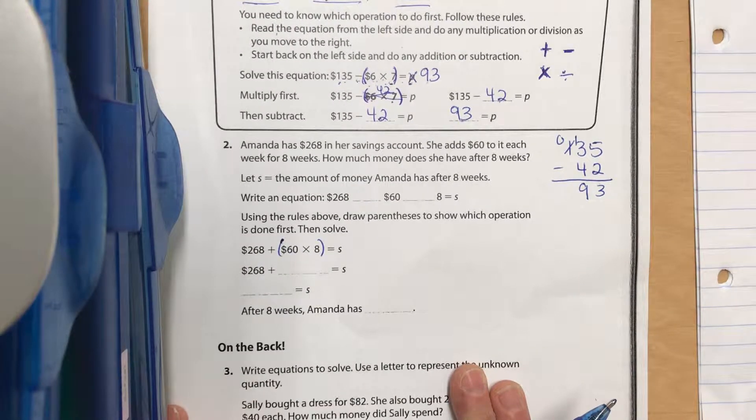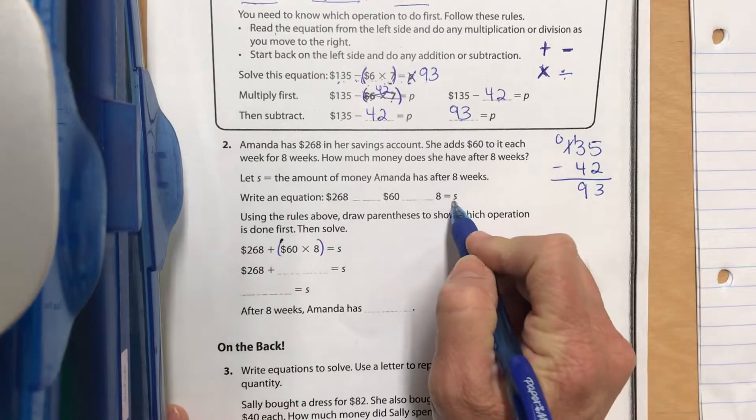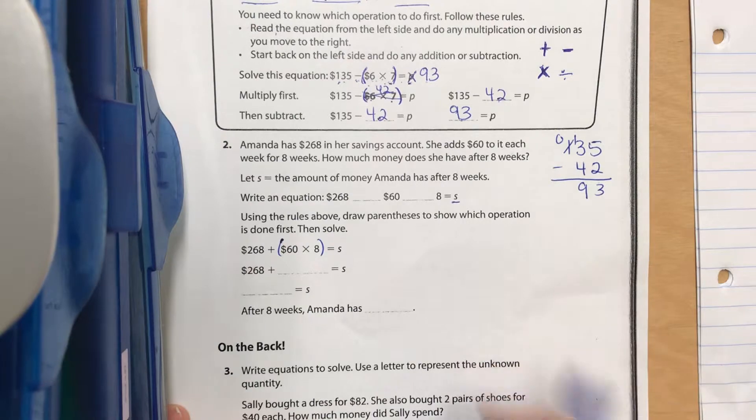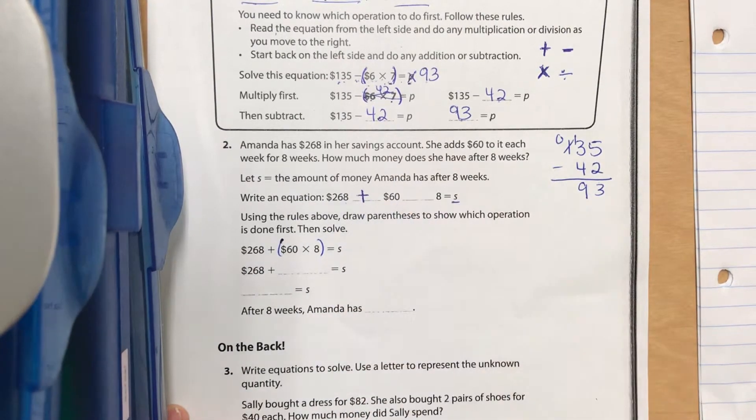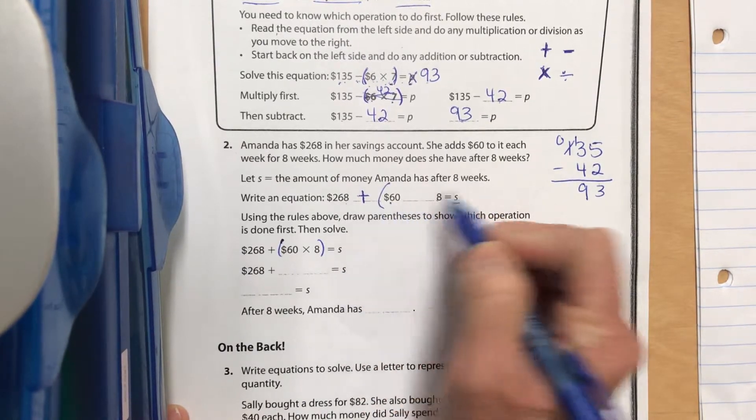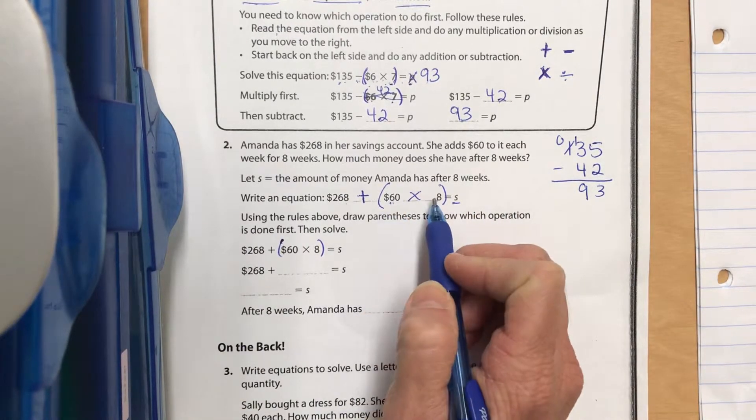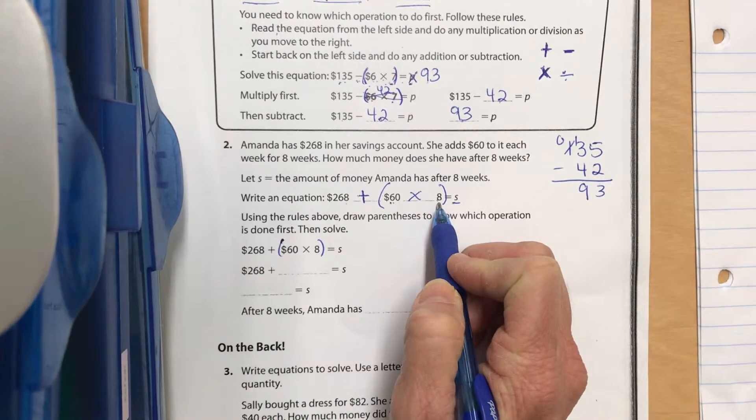Let's look at the one at the bottom. Amanda has $268 in her savings account. If she adds $60 to it each week for eight weeks, how much money will she have? Let S be the total amount of money in Amanda's savings account after eight weeks.